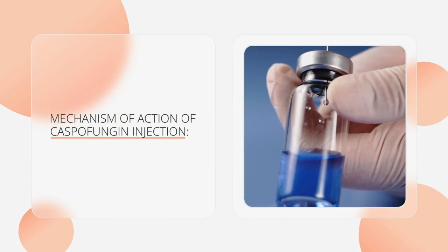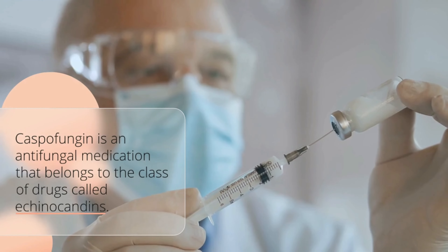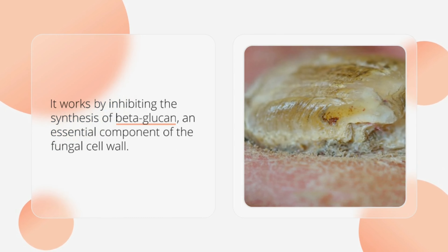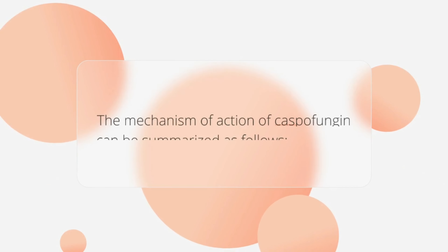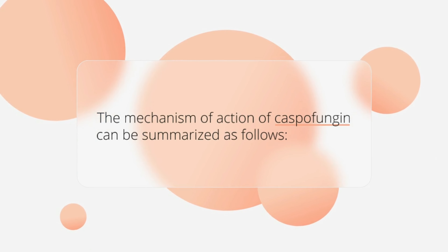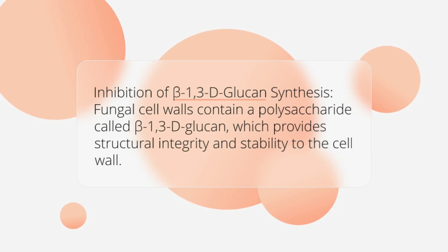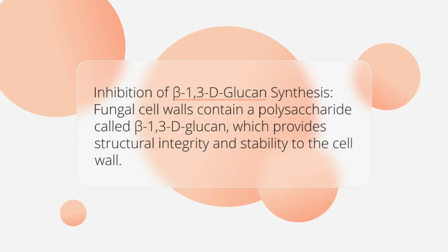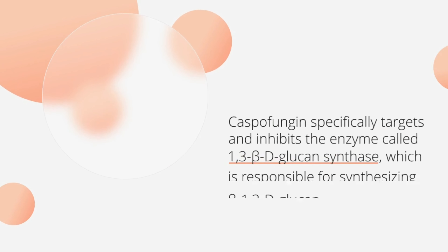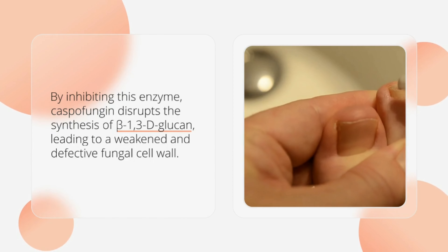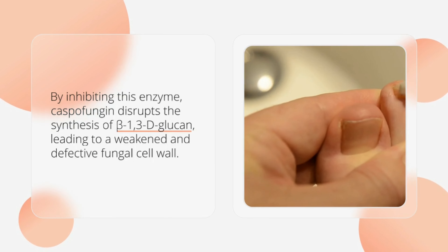Mechanism of action of caspofungin injection. Caspofungin is an antifungal medication that belongs to the class of drugs called echinocandins. It works by inhibiting the synthesis of beta-glucan, an essential component of the fungal cell wall. The mechanism of action can be summarized as follows. Inhibition of beta-1,3-D-glucan synthesis: fungal cell walls contain a polysaccharide called beta-1,3-D-glucan, which provides structural integrity and stability to the cell wall. Caspofungin specifically targets and inhibits the enzyme 1,3-beta-D-glucan synthase, which is responsible for synthesizing beta-1,3-D-glucan, leading to a weakened and defective fungal cell wall.